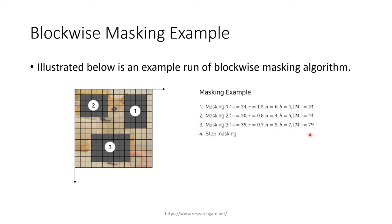Now we have a total of 44 plus 35 — 79 patches masked. 79 over 196 corresponds to approximately 0.45, which is greater than 40%. So we stop our masking algorithm.